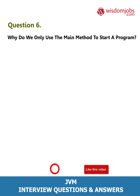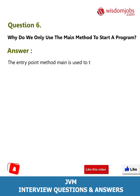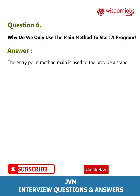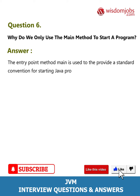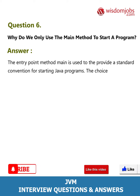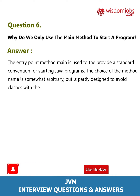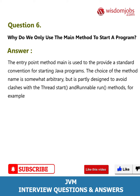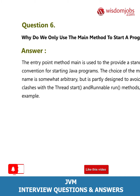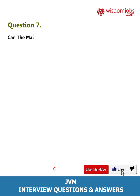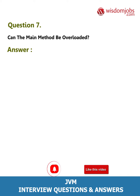Question 6: Why do we only use the main method to start a program? Answer: The entry point method main is used to provide a standard convention for starting Java programs. The choice of the method name is somewhat arbitrary but is partly designed to avoid clashes with the Thread start and Runnable run methods, for example.